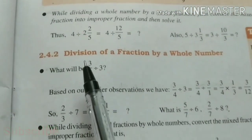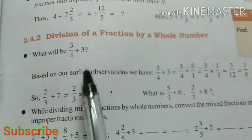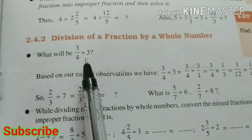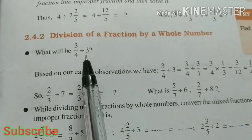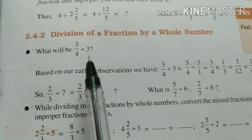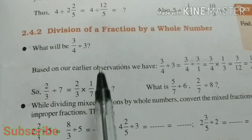Now, division of a fraction by a whole number. 3/4 divided by 3. So how can we write this? 3/4 multiplied by 1/3.